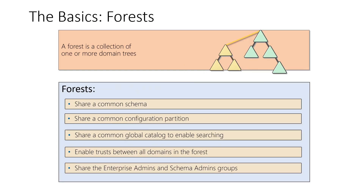The next logical component is forest. A forest is a collection of one or more domain trees. A forest has a common schema, shares a common configuration partition, shares a common global catalog to enable searching, enables trust between all domains in the forest, and shares the Enterprise Admins and Schema Admins groups.